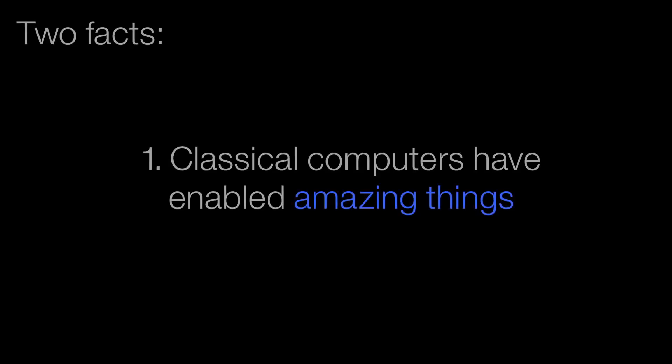I want to start with two facts. Fact number one: classical computers have enabled amazing things — the internet, flying across the country on a plane, the electronic giraffe outside blaring music. Classical computers have enabled just amazing things. But one of the things we don't often talk about is all the things they can't do. We talk about all the stuff they can do, but there are so many things they can't.